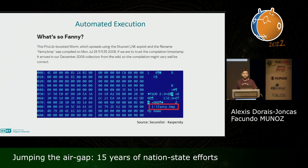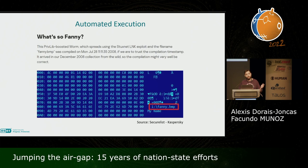It was later discovered by Kaspersky researchers that the Equation Group's FANNY had been exploiting this vulnerability since at least 2008. And even after Stuxnet was released and patched in 2010, FANNY, Gauss, and Miniflame continued to use it for five more years. But since the discovery of this malware, no other exploit-based code execution has been observed in the wild to compromise air gap networks.